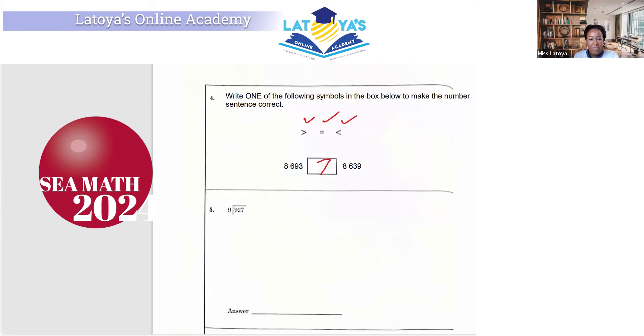Question five. Long division. We have 9 into 927. So it's going to be 9 into 9 is 1, 9 into 2 is 0, and 9 into 27 is 3.